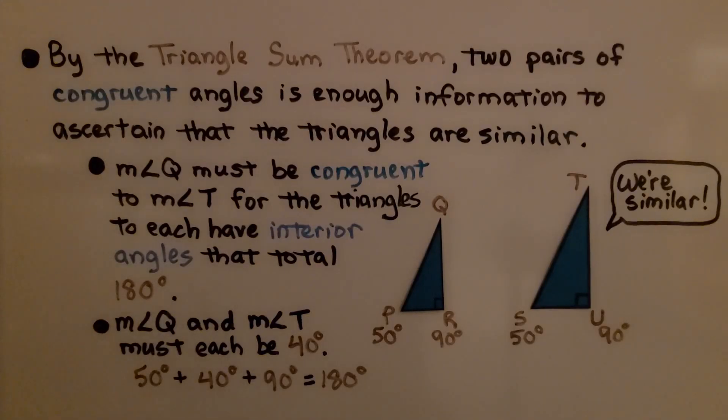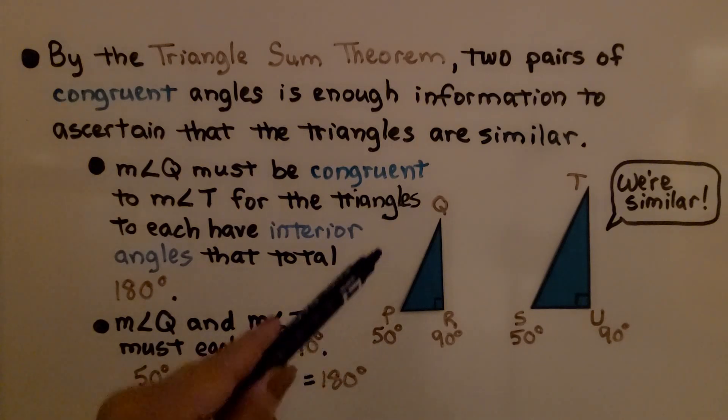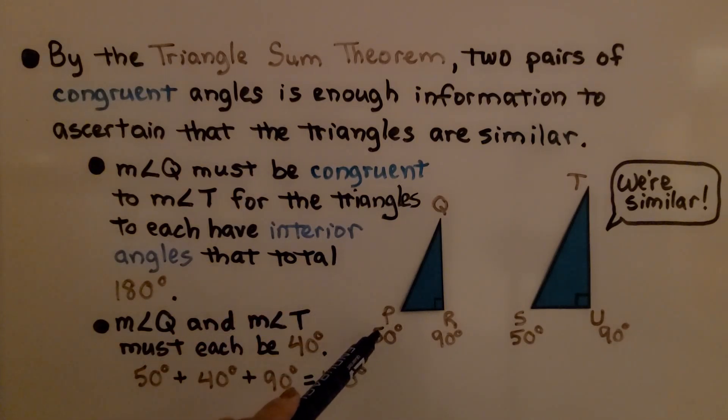Now take a look at these two right triangles. We have angle P is 50 degrees and angle R is 90 degrees. In this triangle, angle S is 50 degrees and angle U is 90 degrees. By the triangle sum theorem,